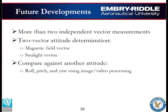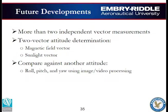Future developments include using more than two independent vector measurements in Wahba's problem, since more measurements improve attitude accuracy. We also want to use a two-vector determination between the magnetic field vector and the sunlight vector instead of the gravity vector, since an accelerometer picks up collisional information that can introduce errors. Finally, we want a reference attitude to compare against our estimated attitude, with one possibility being roll, pitch, and yaw obtained through image and video processing.